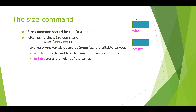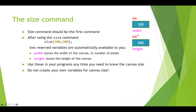The 'size' command should always be the first command in your Processing script. When you call 'size(300, 500)', two reserved variables are automatically created: 'width' holding 300 and 'height' holding 500. Later in your program you can use 'width' and 'height' to make your drawings relative to the canvas size. This is really important — if you change the canvas size, and all your drawings depend on 'width' and 'height', your drawing will automatically scale to it.